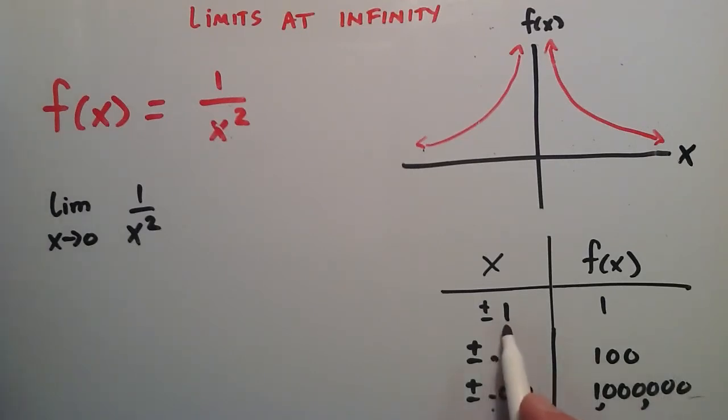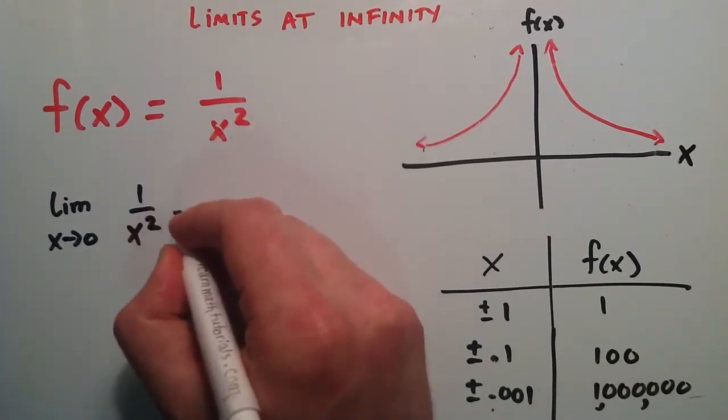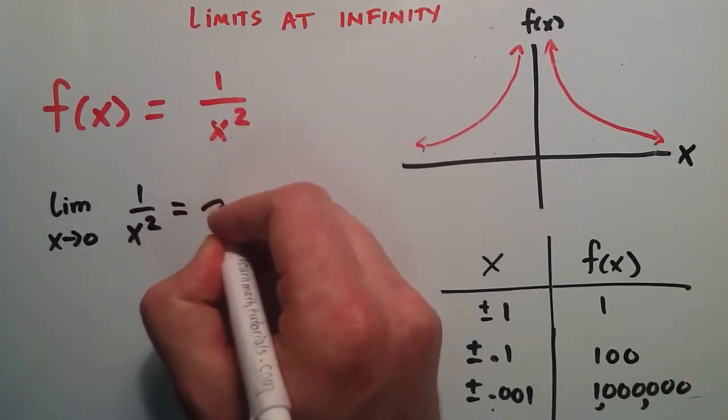As we move closer to x = 0, our function continues to grow very fast. It gets very large the closer we get to 0. Because of this, we can write equals infinity.